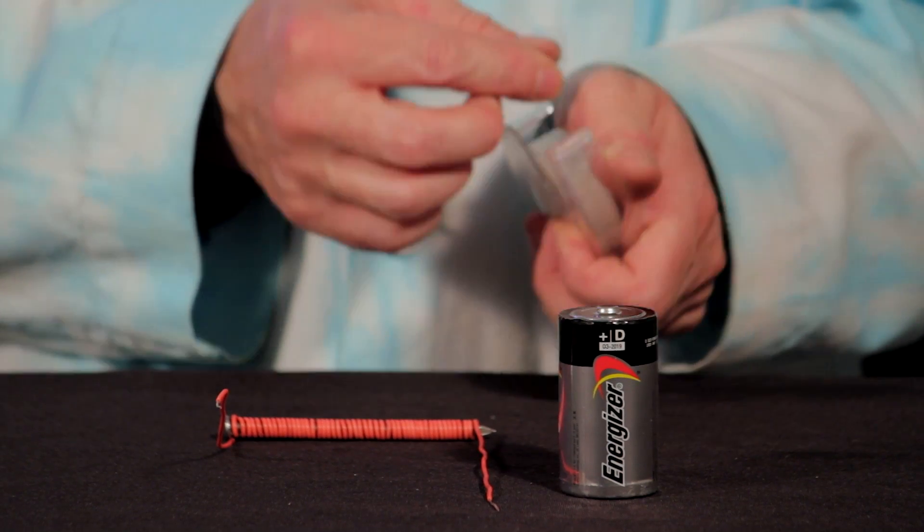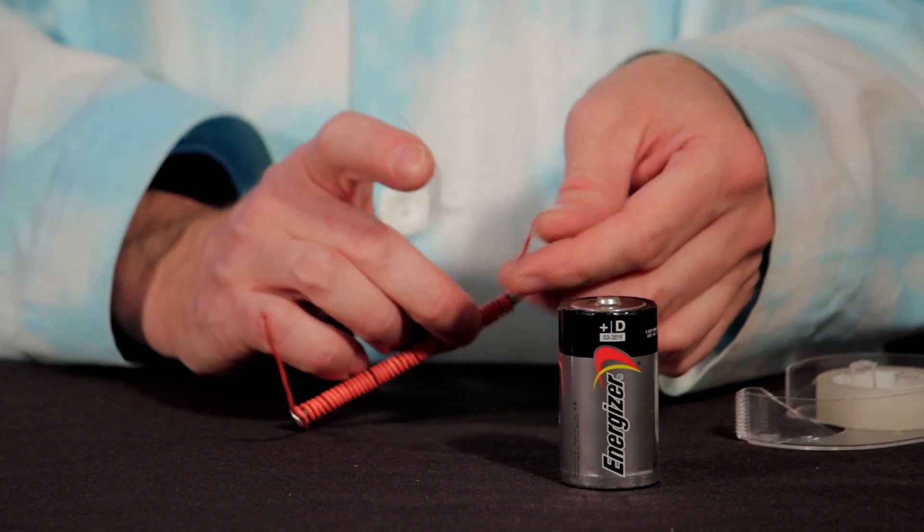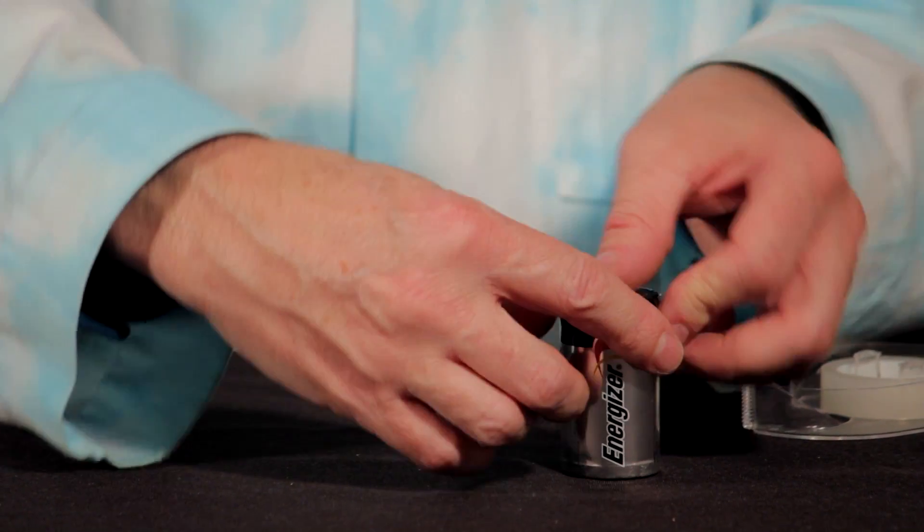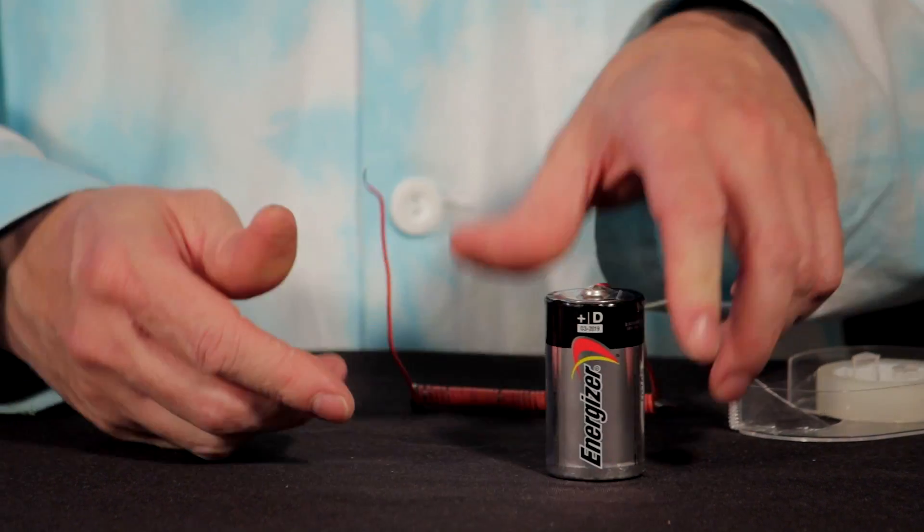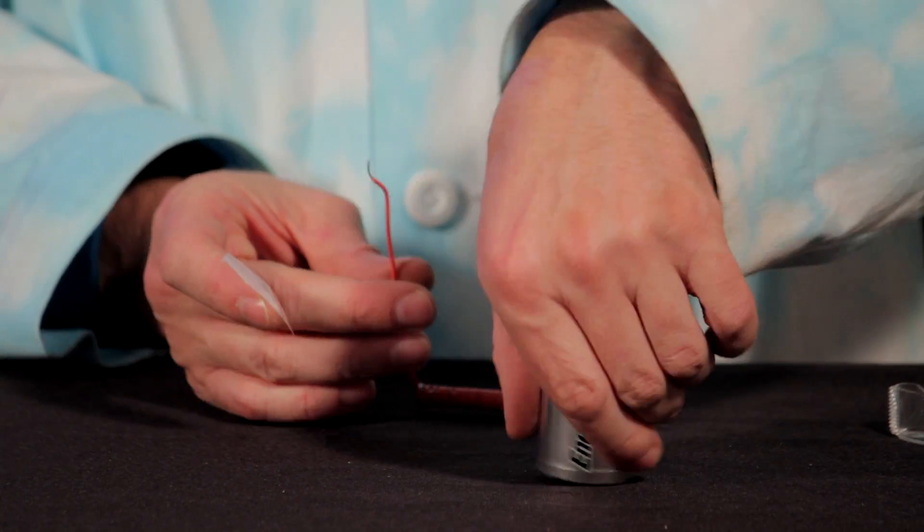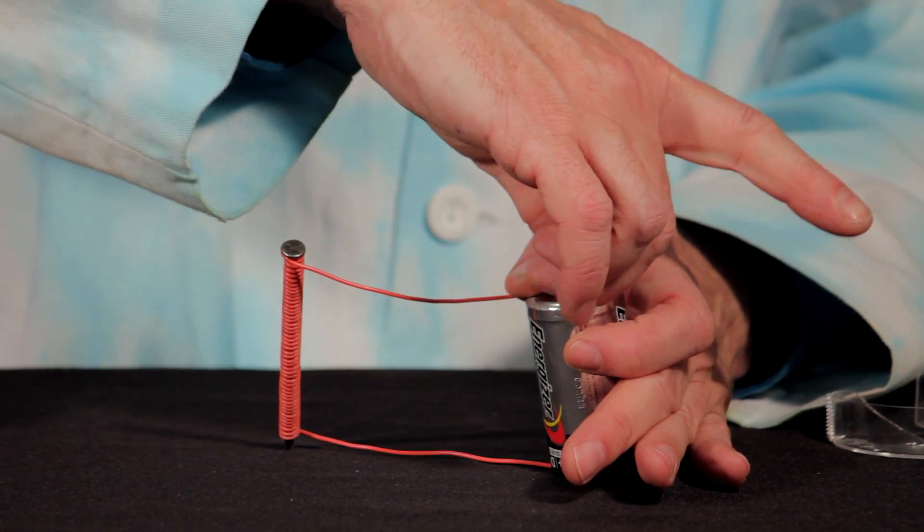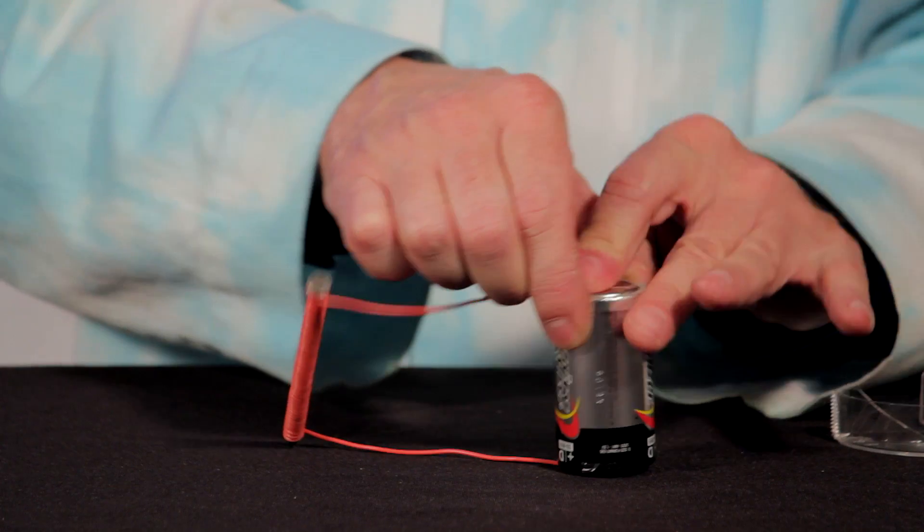Now just grab some tape and tape one end of the wire to one end of the battery. Like that, making sure it touches well. Take the other end of the battery and attach the second wire. Now be careful you don't touch these wires because they tend to get kind of hot.